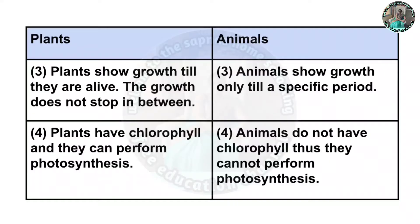Third difference: Plants show growth till they are alive; the growth does not stop in between. Animals show growth only till a specific period. Fourth difference: Plants have chlorophyll and they can perform photosynthesis. Animals do not have chlorophyll, thus they cannot perform photosynthesis.